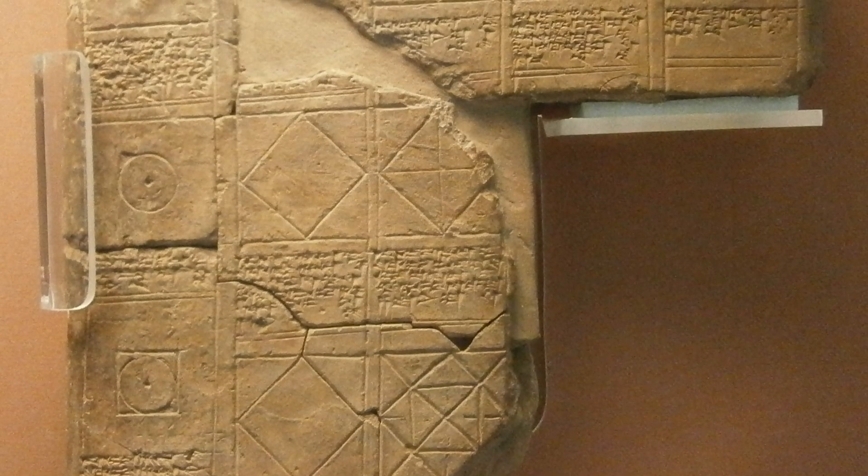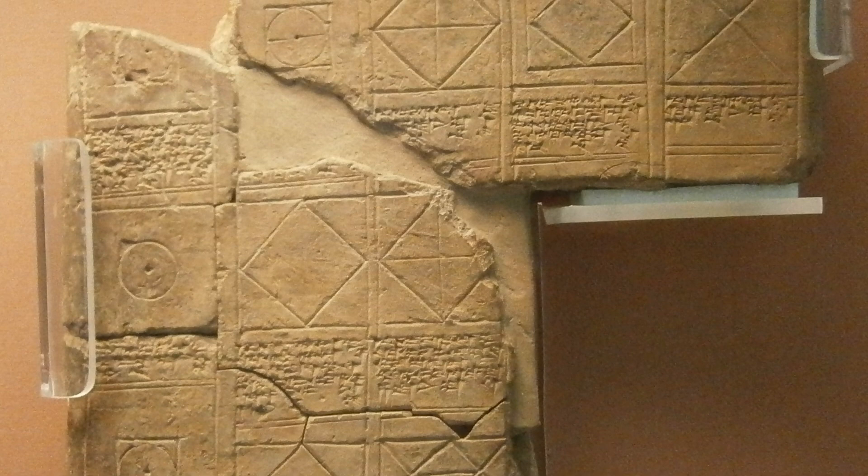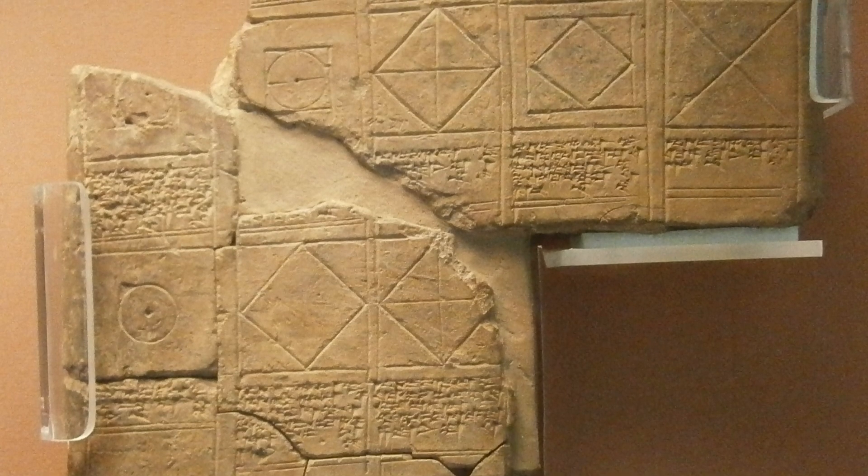In fact, the Babylonians before them also calculated the area of circles and came up with a value of 3.125 for Pi.